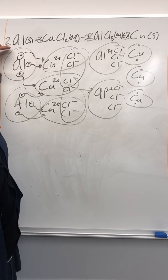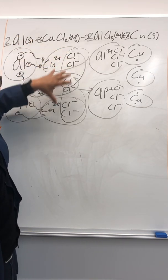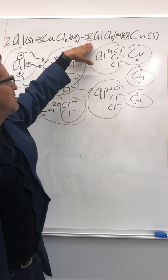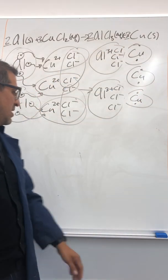So overall, you have two aluminum atoms, solid aluminum atoms, reacting with three copper chloride formula units, react to make two aluminum chlorides and three solid coppers. Okay. That's it.